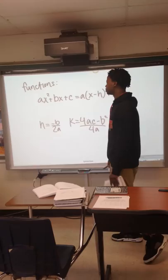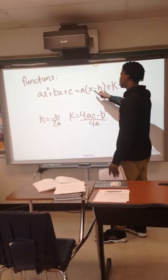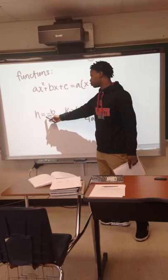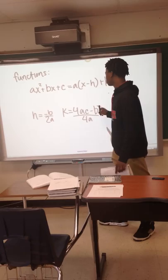ax² + bx + c equals a(x - h)² + k. To find h, it equals -b over 2a, and to find k is 4ac - b² over 4a.